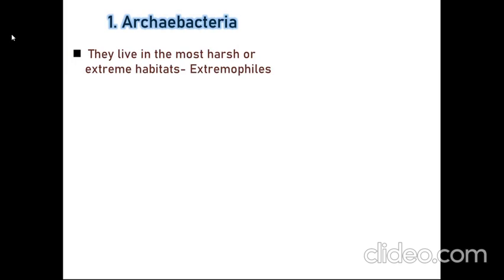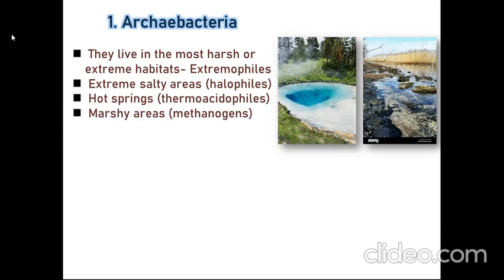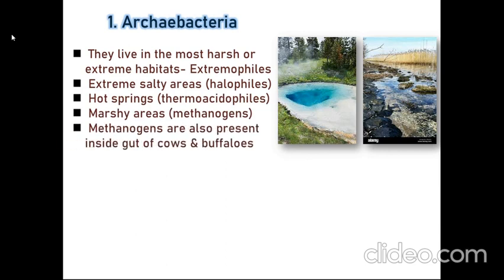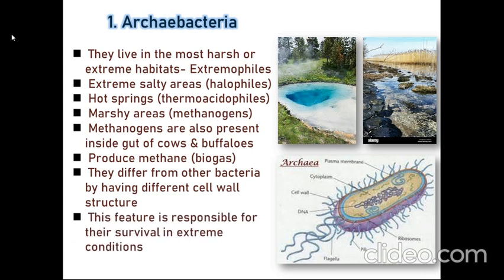Let's see who the archaebacteria are. They live in the most harsh or extreme habitats, so they are also called extremophiles. When they live in extreme salted areas, they are halophiles. In hot water springs, they are thermoacidophiles. In marshy areas, they are methanogens. Methanogens are also present inside the gut of cows and buffaloes, and produce methane or biogas. They differ from other bacteria by having a different cell wall structure, and this feature is responsible for their survival in extreme conditions.